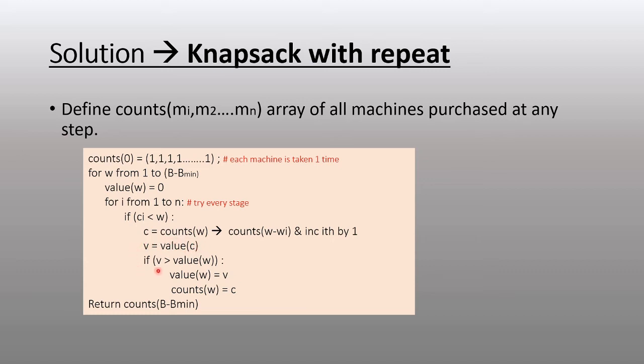We initialize the probability with zero. If our computed value for any machine being used is greater than what we have computed, we select that machine to be purchased for that budget cycle, and we store that.